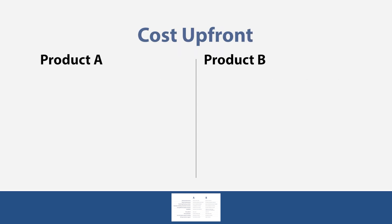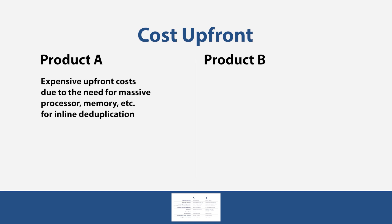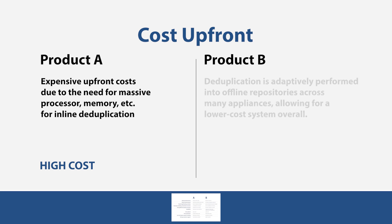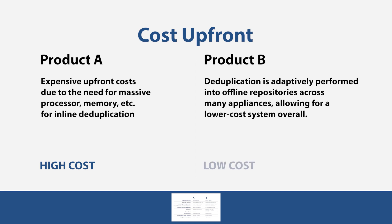Cost upfront: Product A has expensive upfront costs due to the need for massive processor, memory, and other variables for inline deduplication — resulting in high cost. Product B performs deduplication adaptively into offline repositories across many appliances, allowing for a lower cost system overall — resulting in low cost.